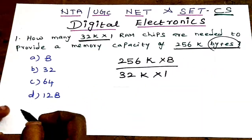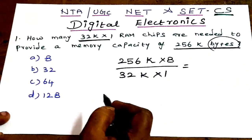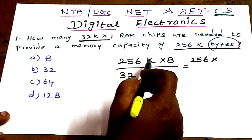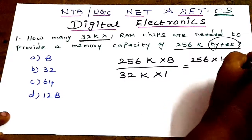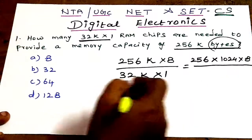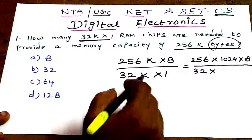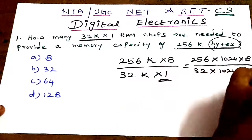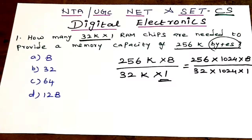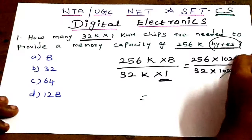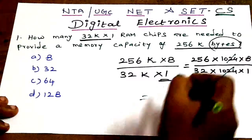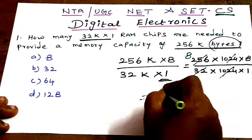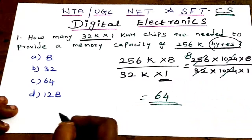The RAM chip size is 32K×1. To calculate: 256 × 1024 bytes (since 1 kilobyte = 1024 bytes) divided by 32 × 1024. The numerator gives 256 × 1024 × 8 bits, and the denominator is 32 × 1024 × 1 bit per chip. Simplifying: 256 × 8 divided by 32 equals 8 × 8 = 64.